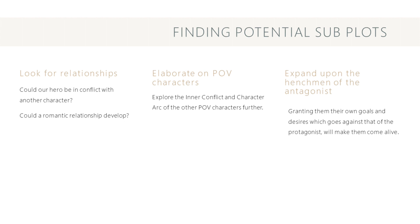We always advise authors to include at least one subplot that focuses on courtship and or love. Such elements are just part of our human DNA, and by incorporating unresolved romance or sexual tension, you will engage your readers. It works best if it involves the protagonist, but a fling between two secondary characters is still better than nothing. Similar to the example with Gandalf, it's always beneficial to elaborate on point of view characters. Find ways to further explore the inner conflict and character arc of these characters — just be careful not to spend so much time on secondary characters that they start to feel like the main protagonist.